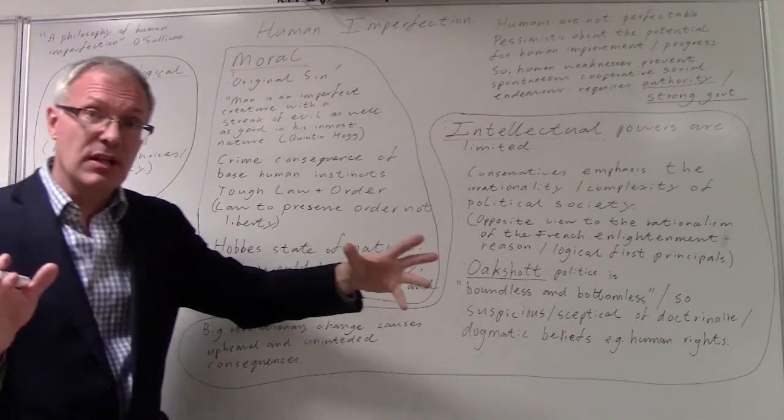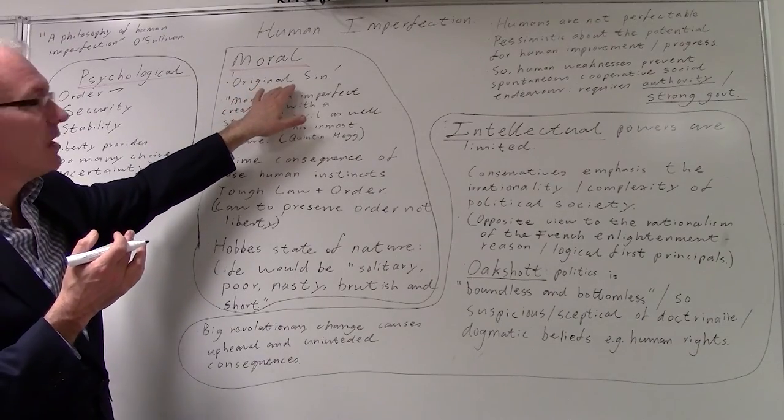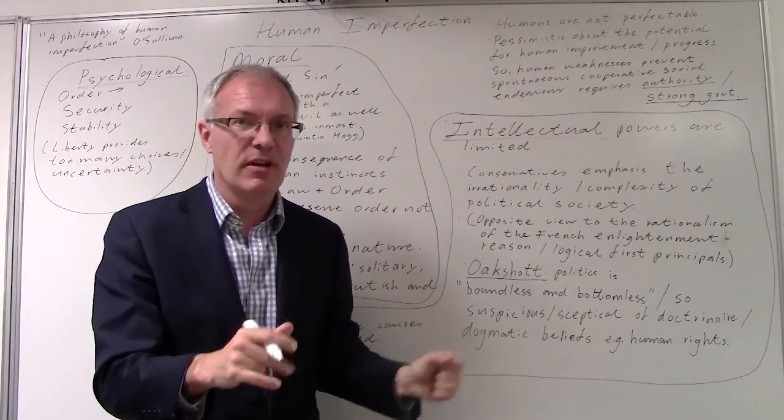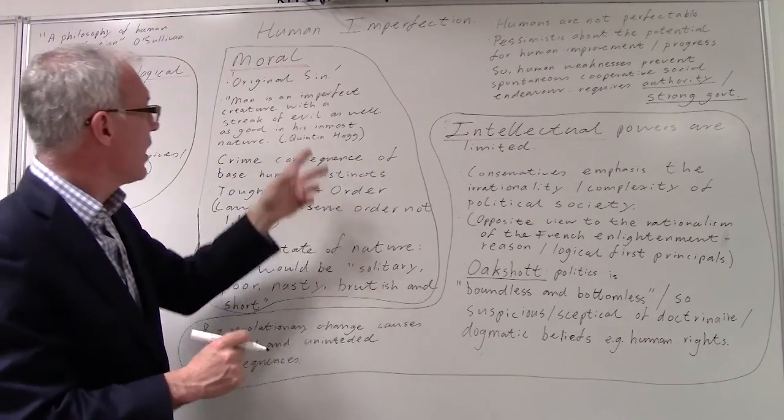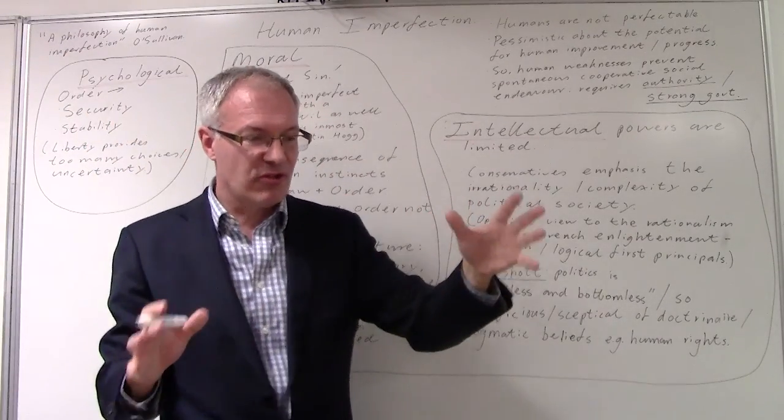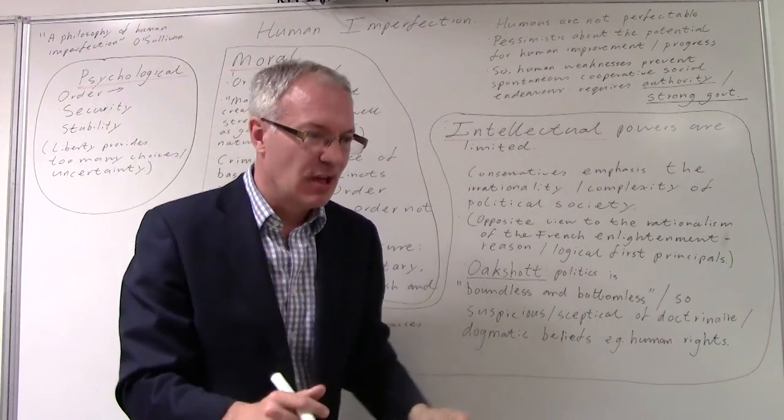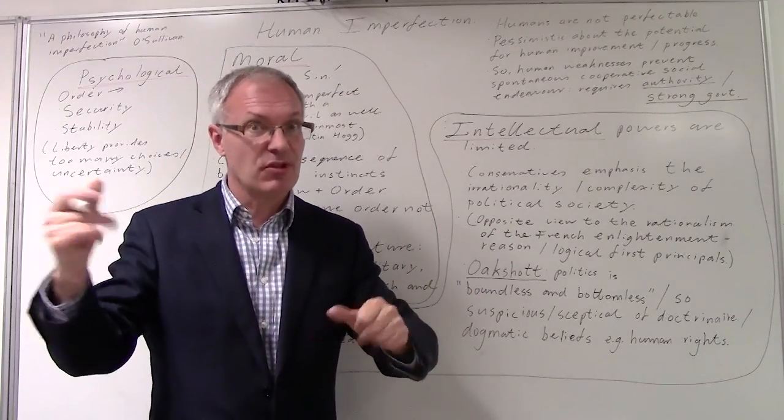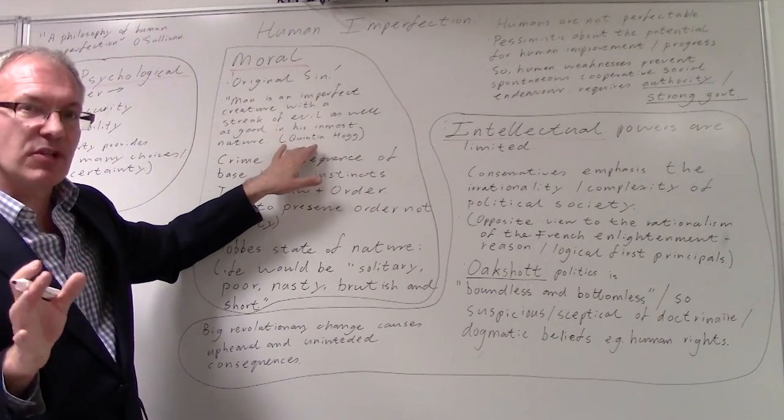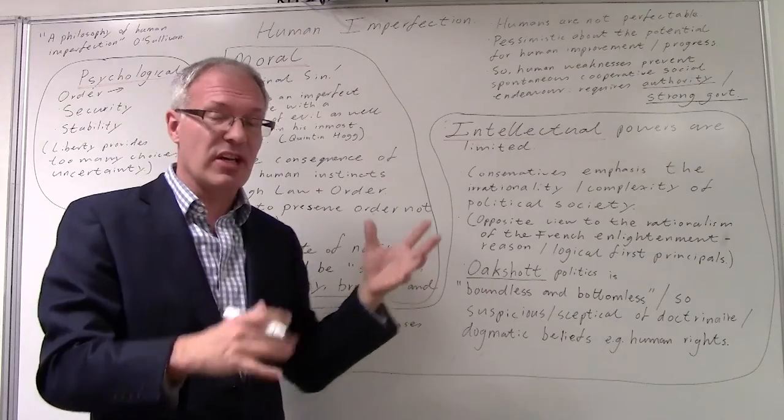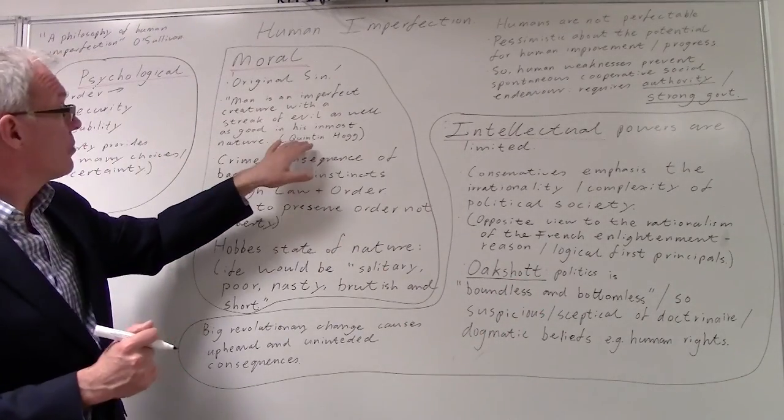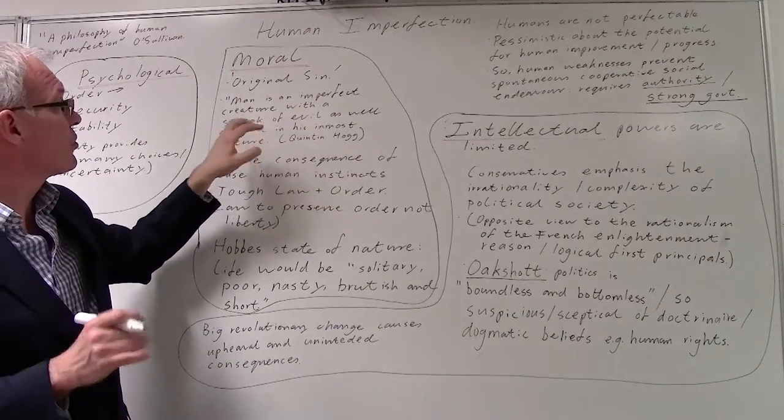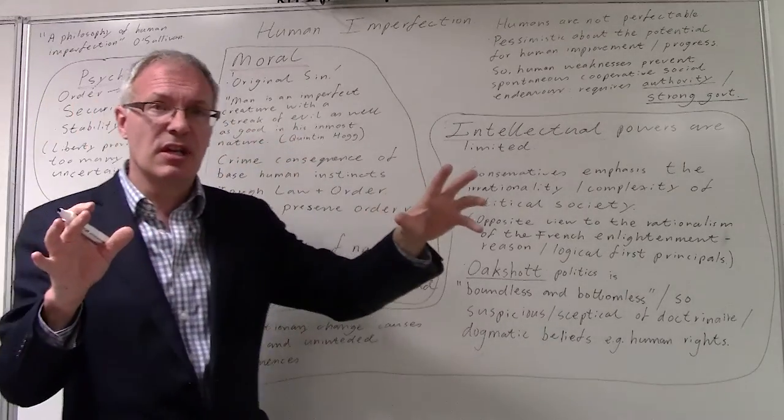Now we come to the moral area. The idea of original sin, which is really an Augustinian idea. The idea that man and woman are fallen after the Garden of Eden experience, and that man is in a state of sin and needs to be rescued by the grace of God. This idea permeates the heart of conservatism from the 1600s onwards. Perhaps modern day conservatism in the 20th century emphasizes secular aspects rather than religious aspects. Quinton Hogg, writing in 1947, said that man is an imperfect creature with a streak of evil as well as good in his inmost nature.